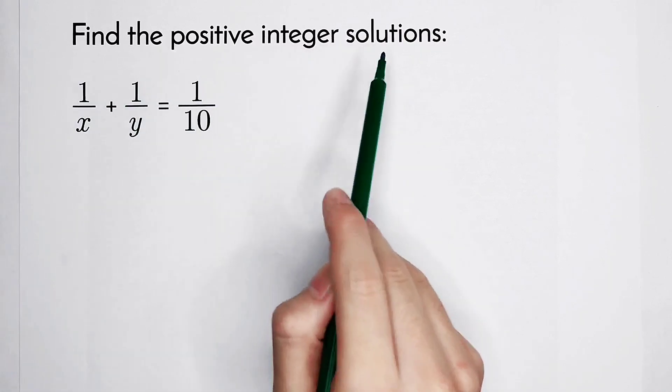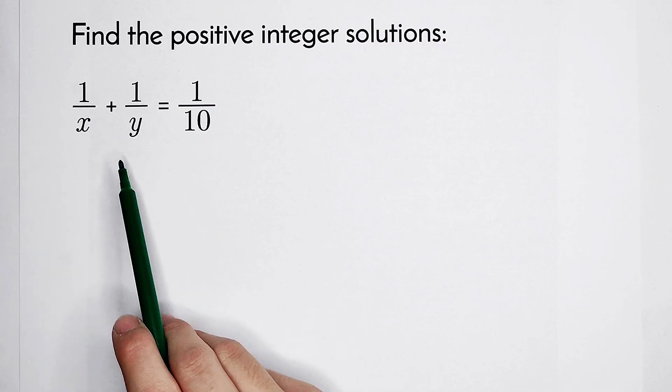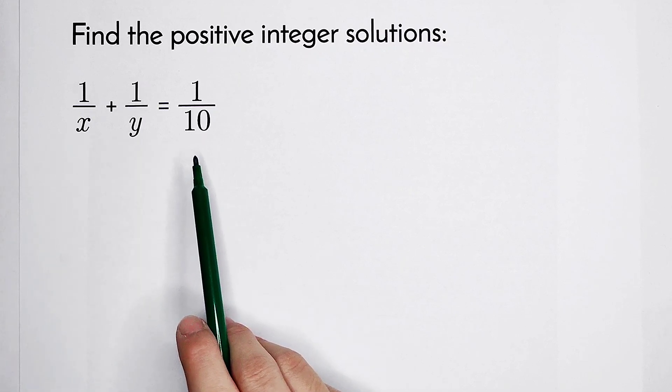Find the positive integer solutions of this equation: 1 over x plus 1 over y is equal to 1 over 10. How should we solve it?